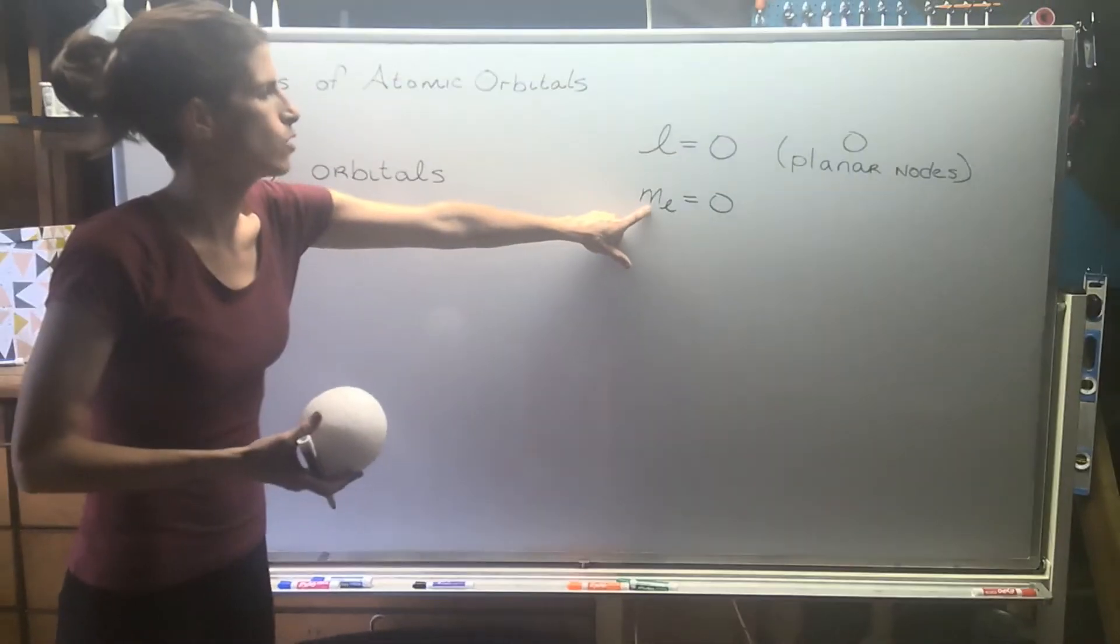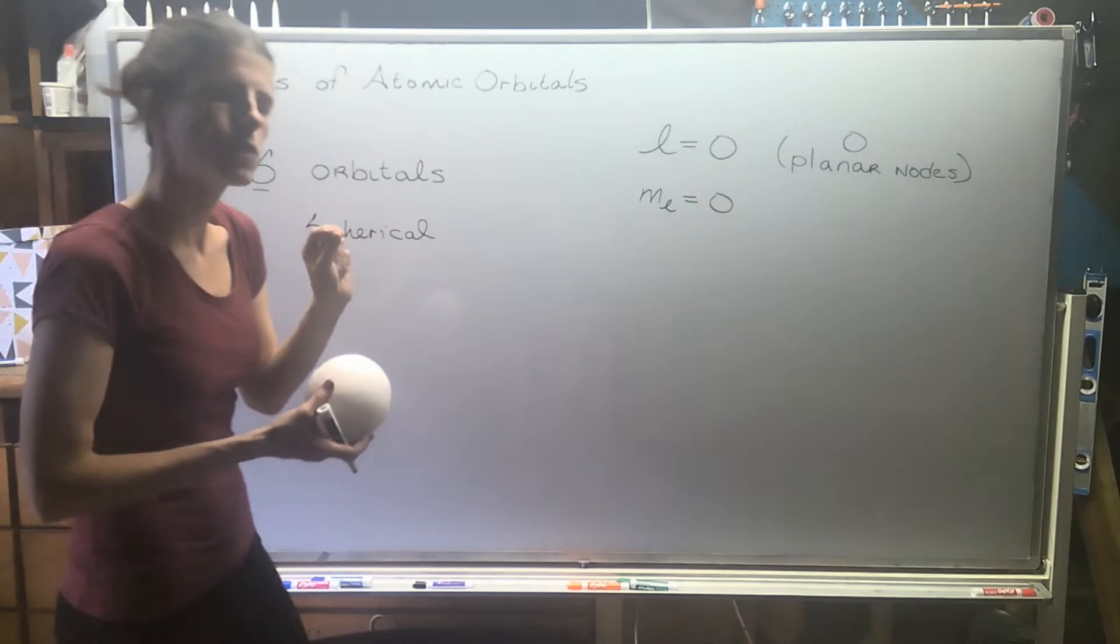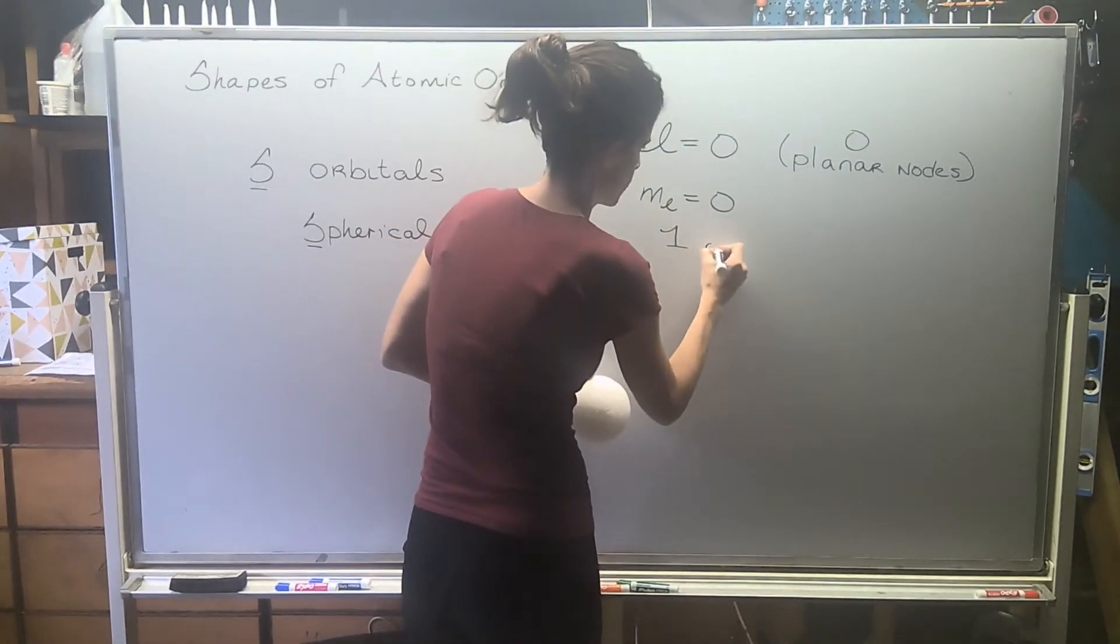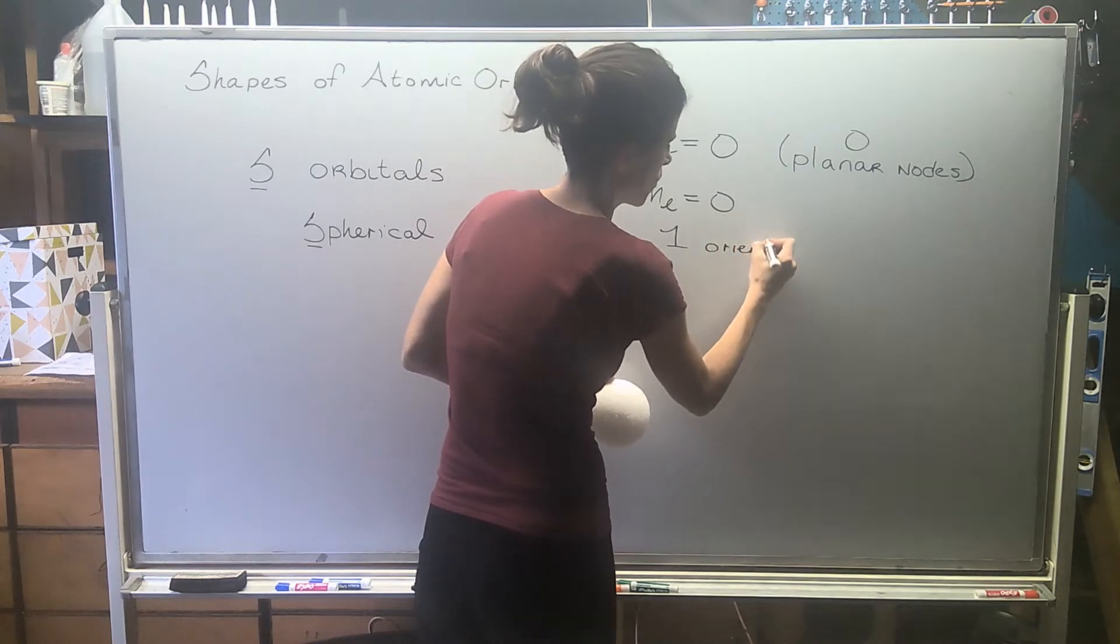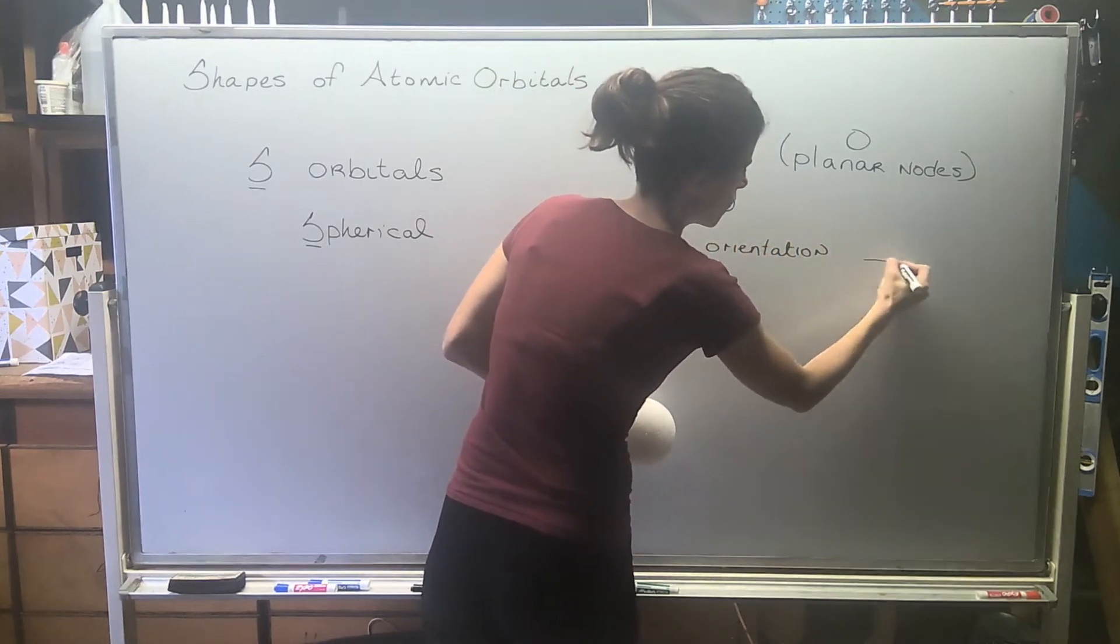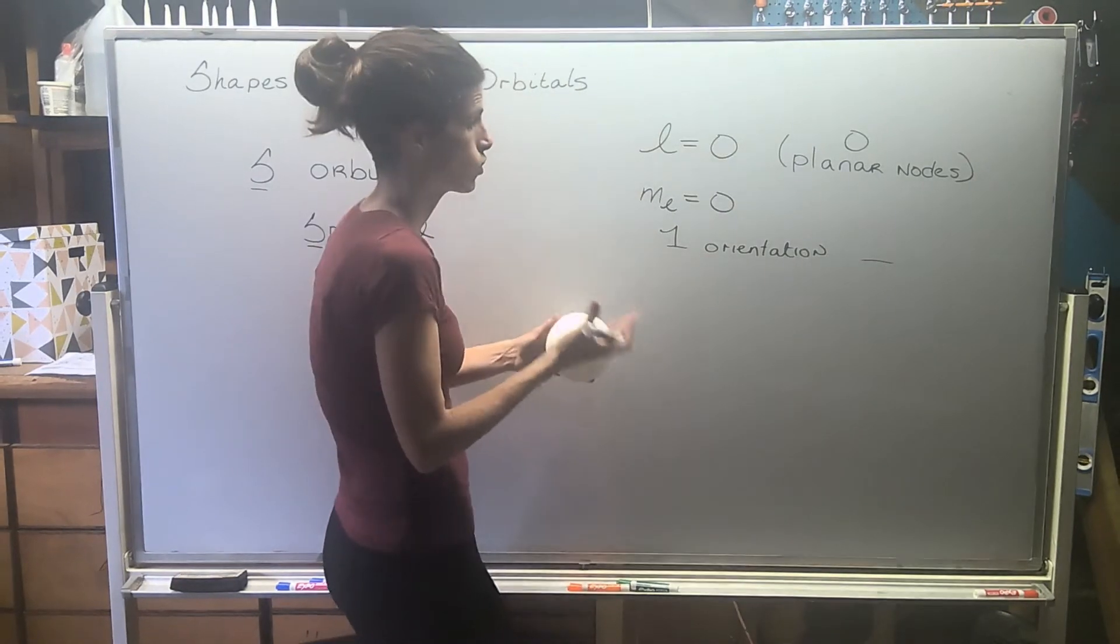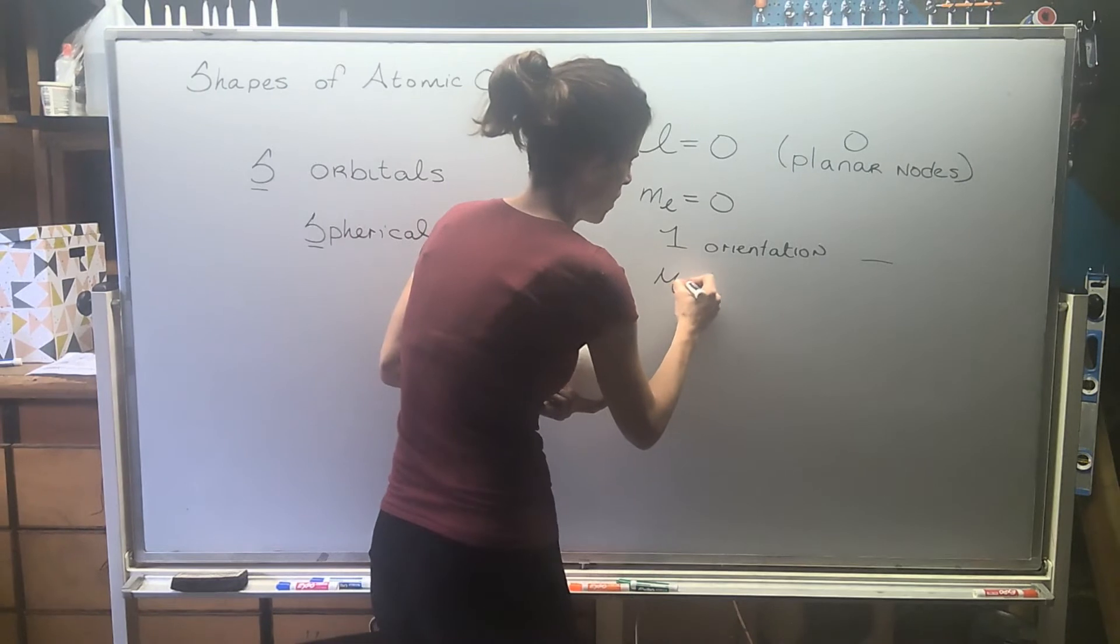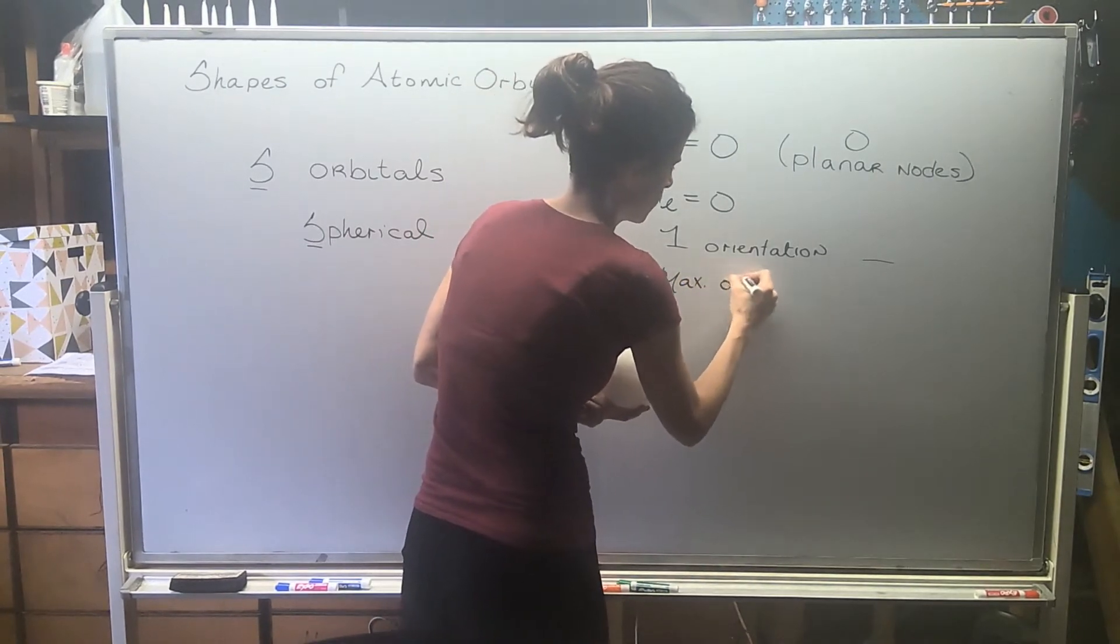The ml value is zero, so that means we only have one orientation. When you do your electron configurations, you only have one line, and so an s orbital holds a max of two electrons.